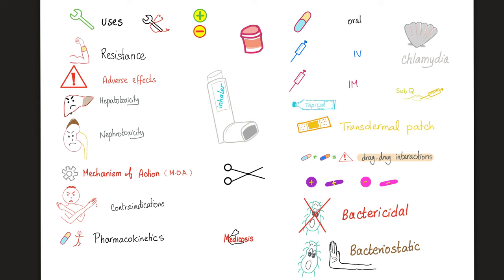This is a gram-positive coccus, this is a gram-positive rod, gram-negative coccus and gram-negative rod — all of these are bacteria. This symbol means bactericidal, meaning the medication will kill the bacteria. Cidal means killer, as in homicide and suicide. But this means the medication is bacteriostatic — it's not going to kill the bacteria, but it will hinder its replication.